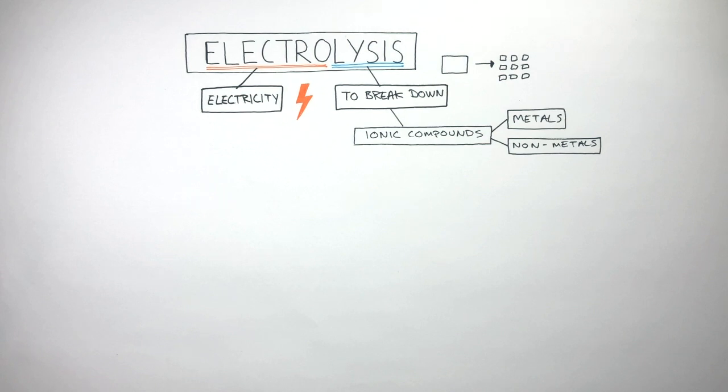This allows us to use metals in objects such as cars, bikes, electrical circuits, and we extract non-metals such as oxygen, hydrogen, and then sodium hydroxide to make bleach, along with chlorine as well.